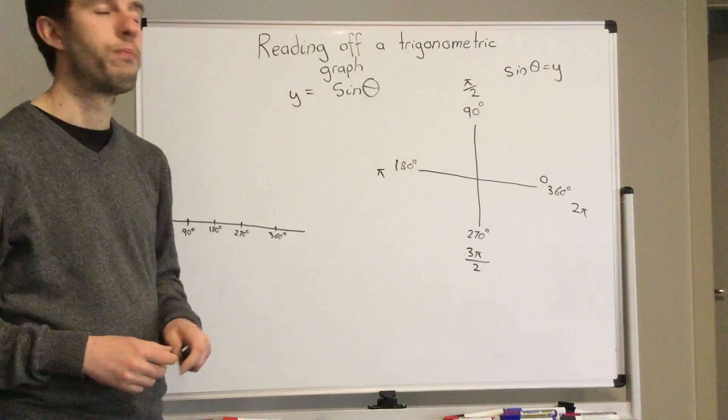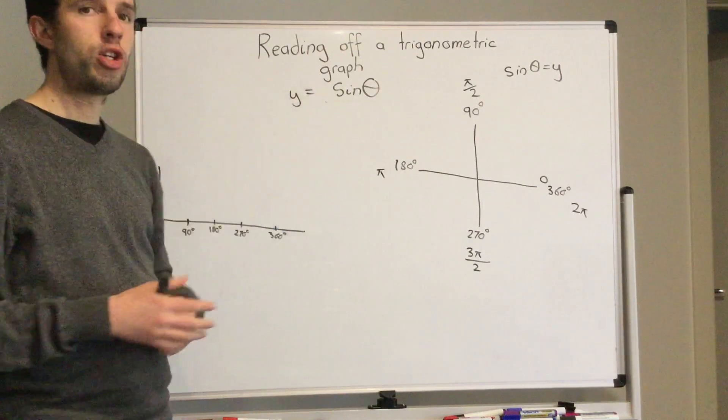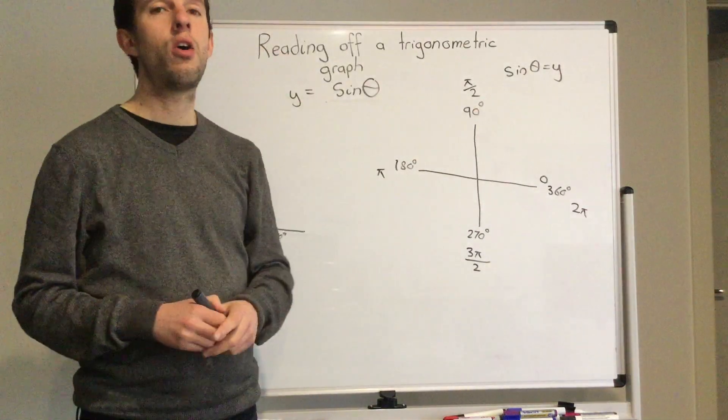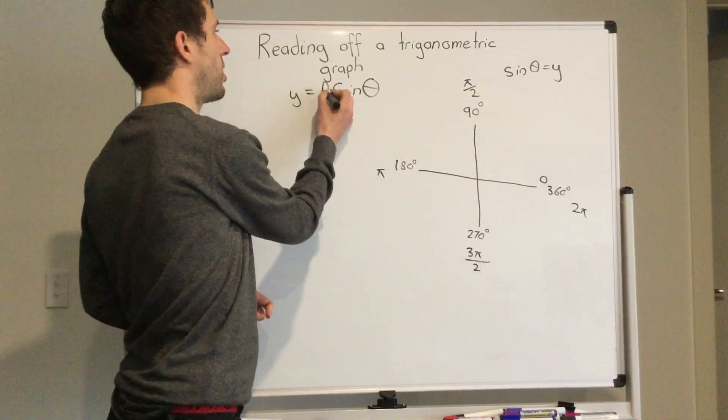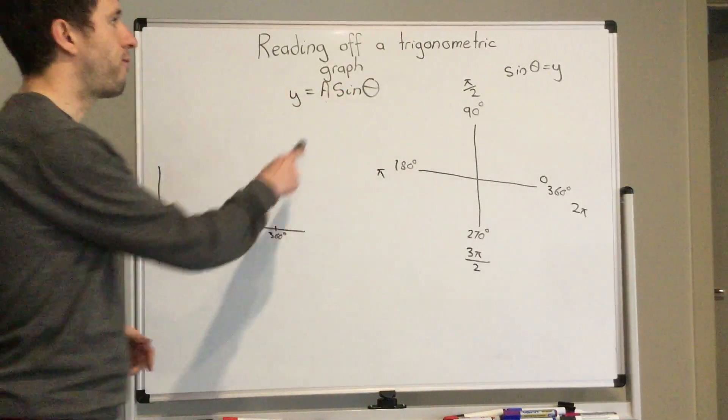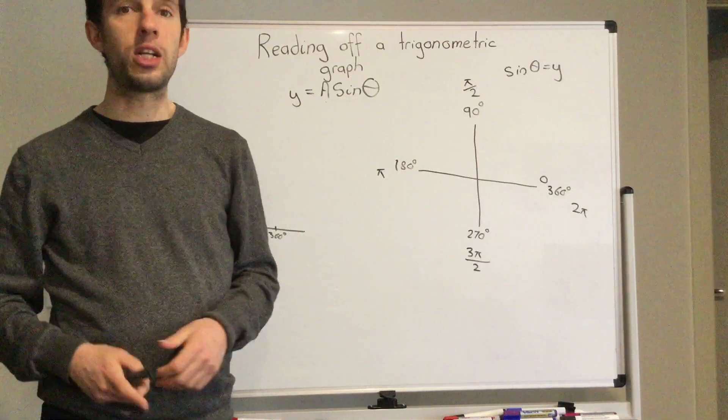The next thing I want you to think about is the amplitude, so how big our circle is going to be. That is normally a letter a here before our sine. If that number changes, then our amplitude changes.